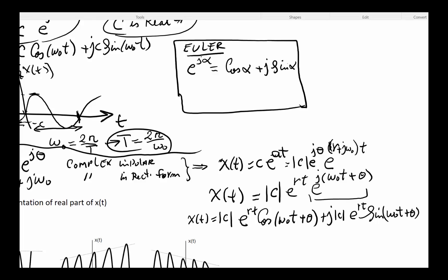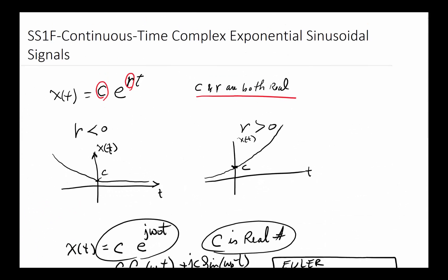If we want to plot this, we look at just the real portion. The real portion has a magnitude and an exponential component. If r is positive, it grows exponentially. If r is negative, it shrinks exponentially. And it has a sinusoidal signal - that's where the name comes from: continuous-time complex exponential sinusoidal signal.